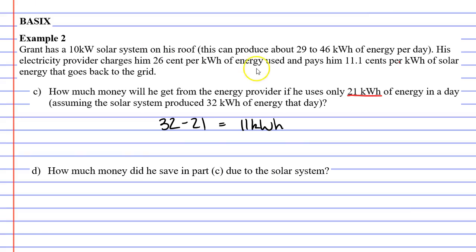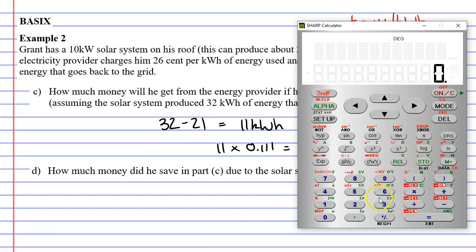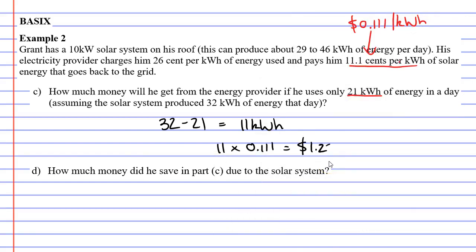So he's going to make money off this, remembering that when it goes back to the grid, they're going to give you $0.111 per kilowatt hour. So we're going to multiply these together. We're going to multiply the number of kilowatt hours by the amount of money he gets back. 11 times 0.111 equals, and we get $1.22.